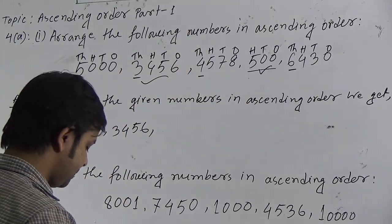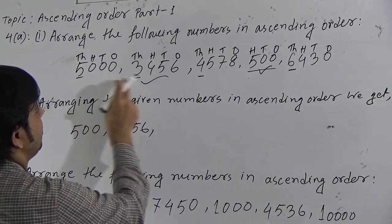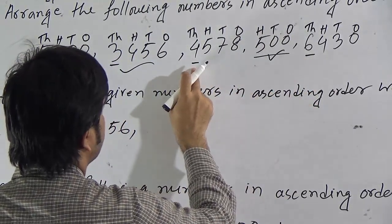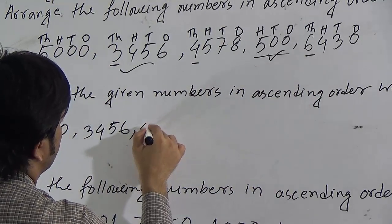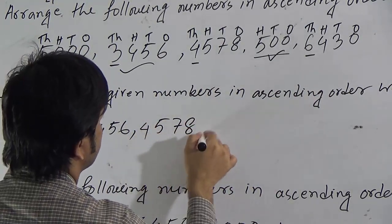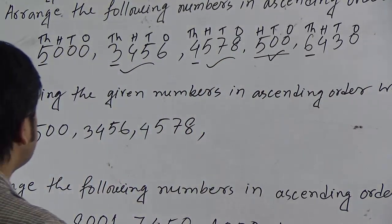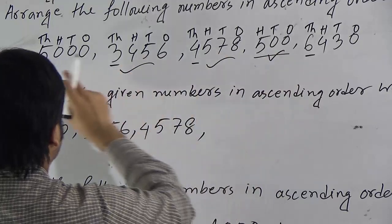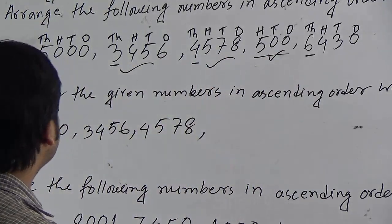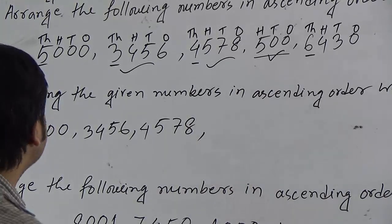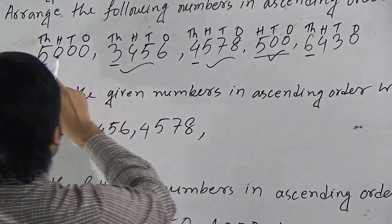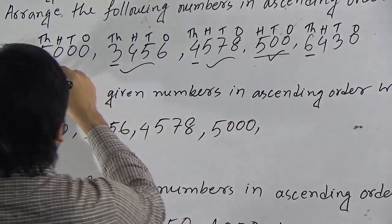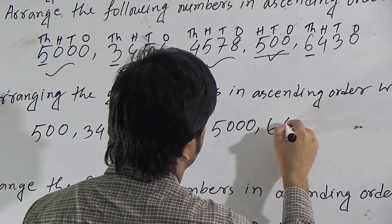Now three numbers are left. Comparing the thousands positions of the remaining three numbers: five, four, and six. Four is the smallest, so we write 4,578 next. Now two numbers remain: five thousand and six thousand four hundred thirty. Comparing their thousands positions — five and six — five is smaller than six. So five thousand is written next, and the remaining number 6,430 comes last.